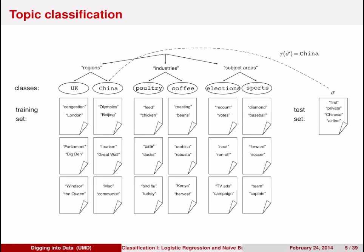Classification is used for many problems. And even if you restrict yourself to news articles, there are many possible classifiers that you could define to distinguish documents. For example, you might distinguish documents in terms of the region being discussed, the industries being discussed, or the subject areas or topics being discussed. Given each of these training sets, you would get a different classifier.